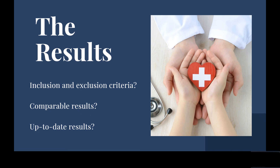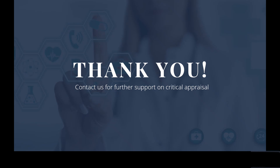Are the results similar enough in their characteristics that they can be compared to one another? If there are variations, is this discussed and do you think it could have had an effect? Are the results as up to date as they can be? Thank you for watching this video. In the next tutorial we will focus on forest plots, which you will often find in a systematic review. If you need further help with critical appraisal, please contact your site library or visit our course on Moodle.